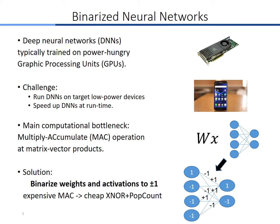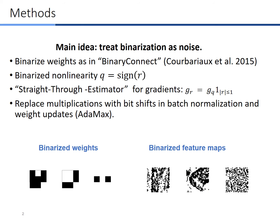Our solution is to binarize the weights and activations to plus or minus one, thus converting the expensive MAC operation to cheap logical operations: XNOR and population count. The main idea is to treat binarization as noise and harness the network's tolerance to noise to relax the hardware demands.